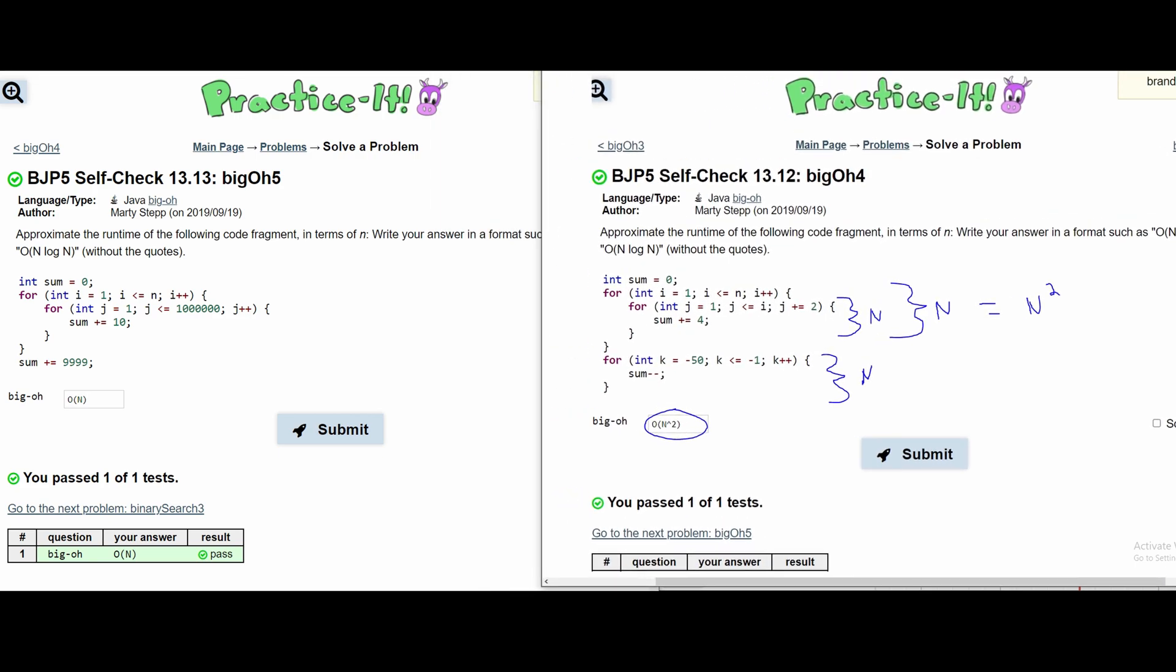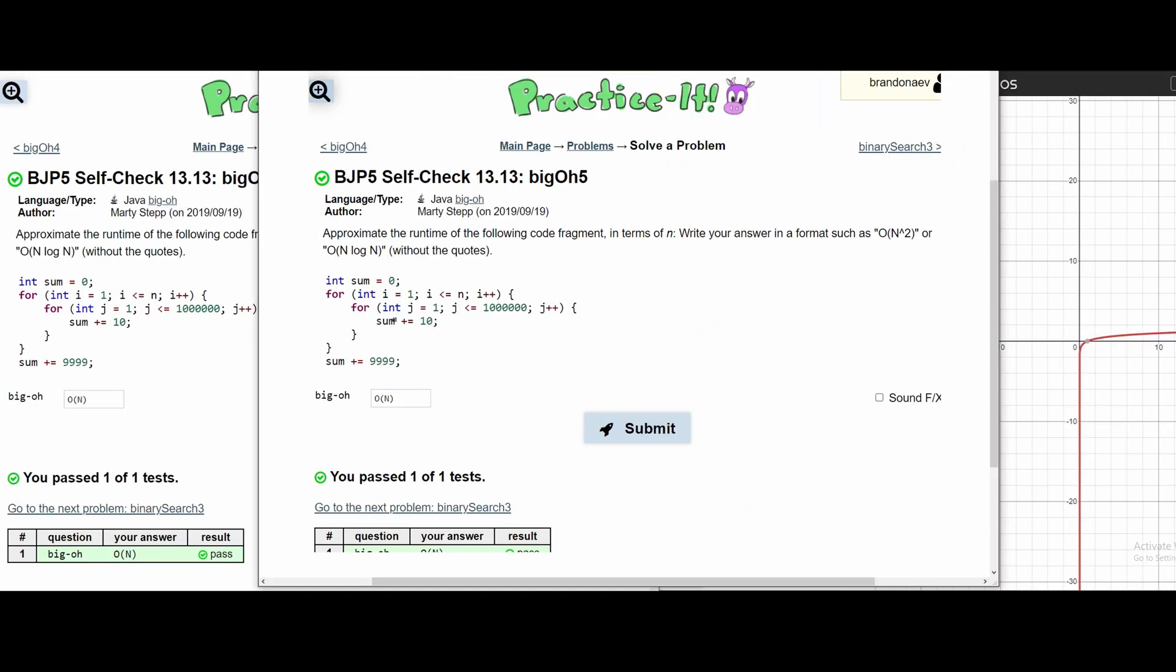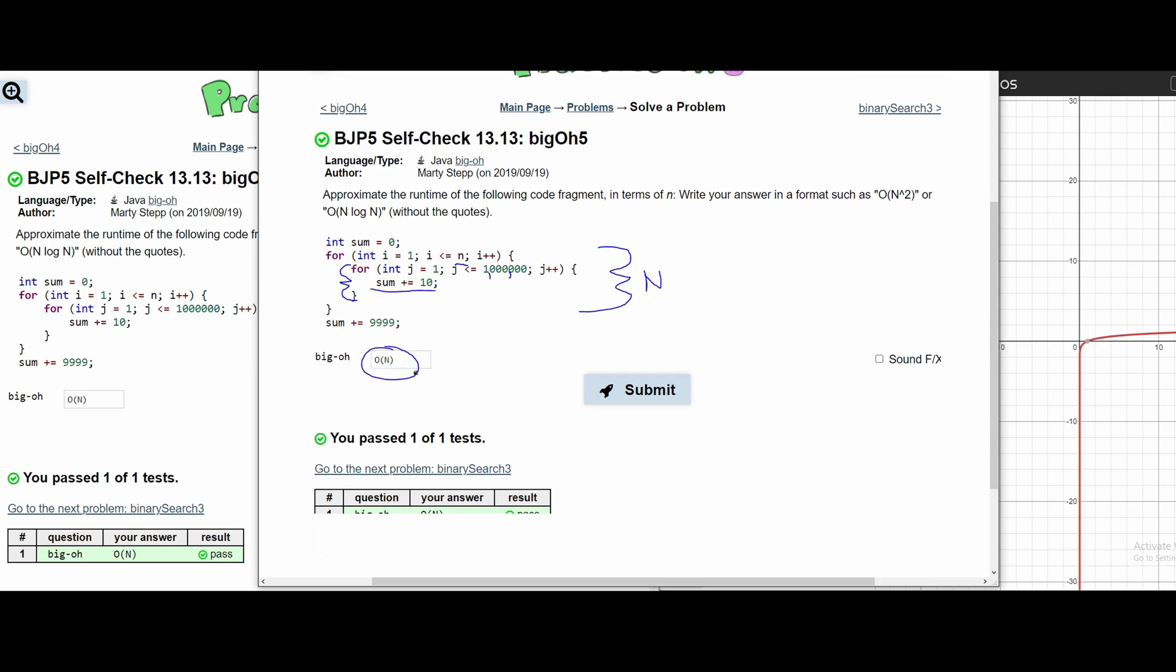For Big O 5, we look at this and we have two for loops. And this is going to go through our code 1 million times. So this statement is going to execute 1 million times. In here, it is a set value of how many times it is going to loop through. And in our outside loop, we have our n times. So we don't know that, which means we are going to be left with an n. And that is our answer.